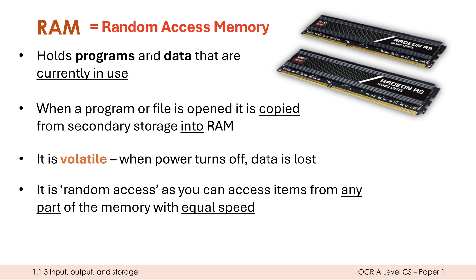In terms of the acronym itself, it's not the most helpful acronym in describing what it is, but random access refers to the fact that you can access items from any point — a random point on the RAM — and it should take exactly the same amount of time to access it. There is equal speed across all parts of this memory. This fact is important to store away, because it explains why in paper two the Big O notation for indexing an array is constant time.